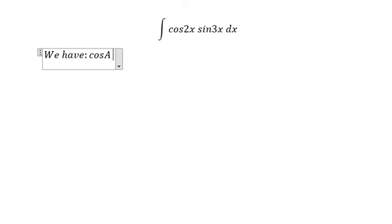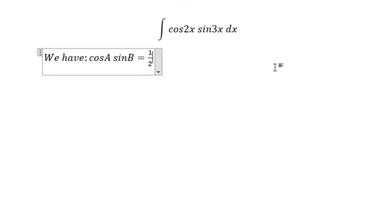Cosine A multiply with sine B equals to 1 over 2 open the bracket sine A plus B minus sine A minus B.